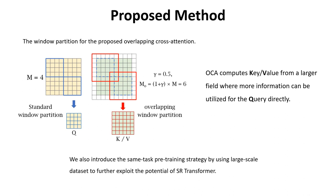Additionally, we introduce a same-task pre-training strategy using larger-scale datasets. The model is trained on ImageNet and then fine-tuned on the specific dataset. We believe that larger-scale data are vital for exploiting the potential of SR transformer.